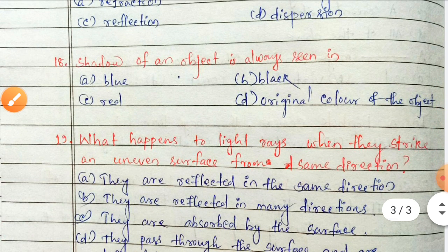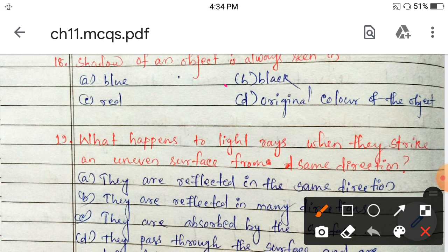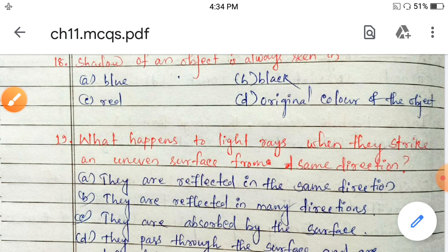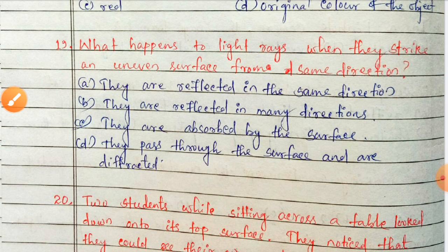Next: the shadow of an object is always seen in blue, black, red, or the original color of the object? Shadow is always black — so option B is correct. Next: what happens to light rays when they strike an uneven surface from the same direction? They are reflected in the same direction, reflected in many directions, absorbed by the surface, or they pass through the surface and are diffracted?